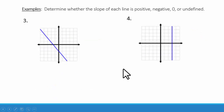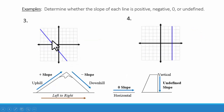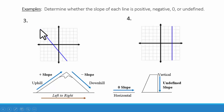For number three, we can see we are going downhill from left to right. When the line goes downhill from left to right, we have a negative slope. So for number three, our slope is negative.